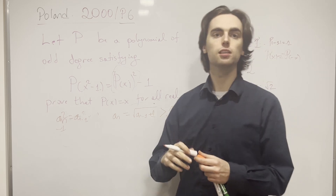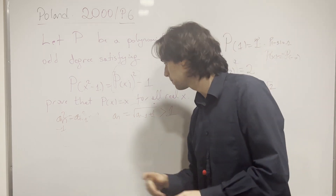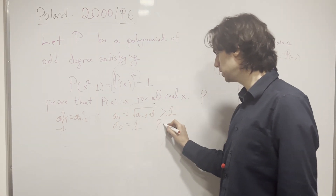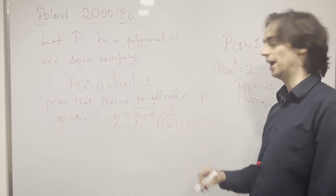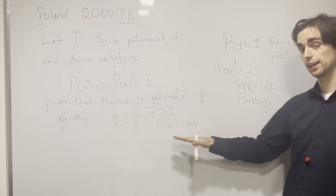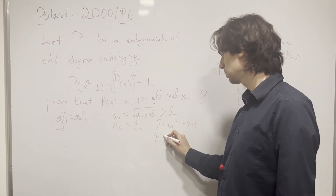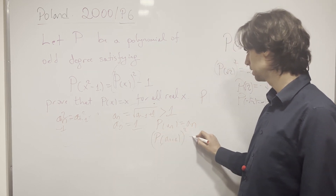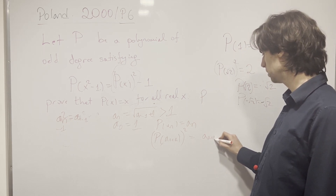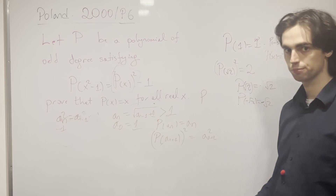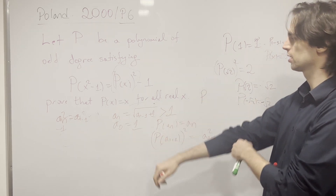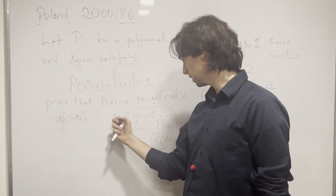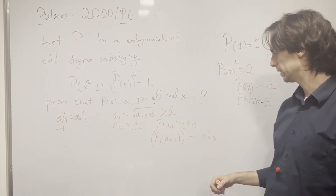We're going to prove inductively, starting from a_0 equals 1. Assume that P(a_n) equals a_n. Then plugging in x equals a_{n+1} into the functional equation, we get P(a_{n+1} squared minus 1) equals a_{n+1} squared minus 1, which by the recurrence gives us P(a_n) equals a_n. So the inductive step follows.